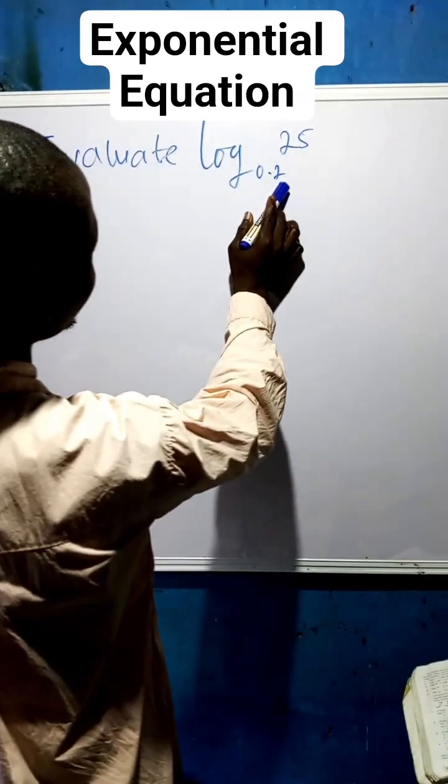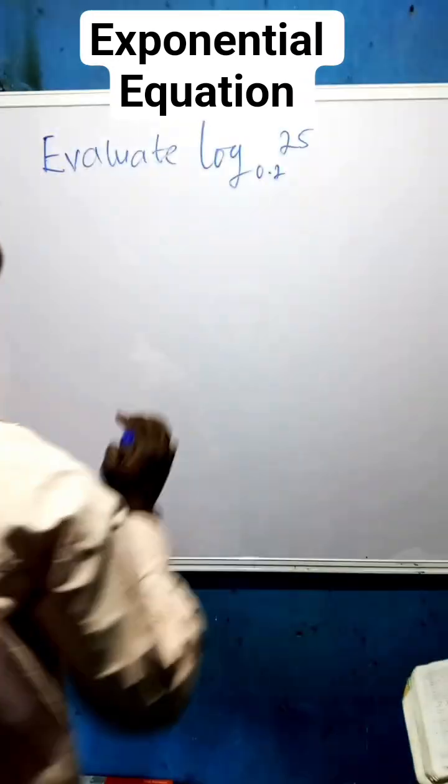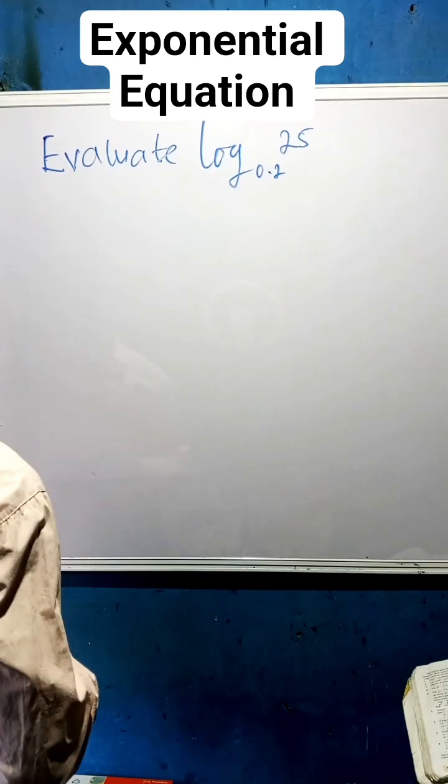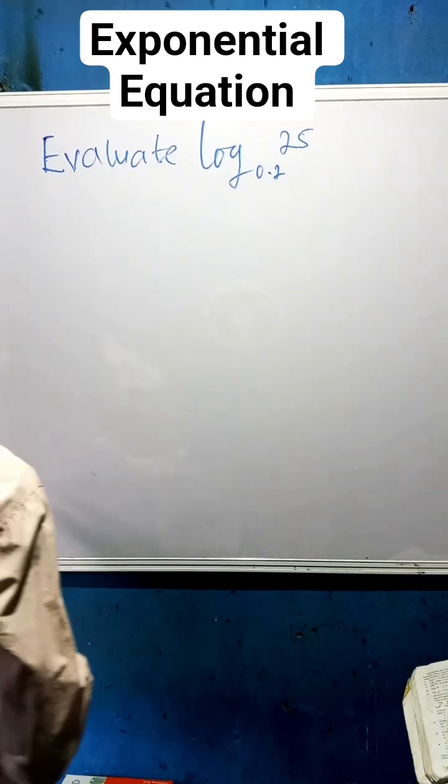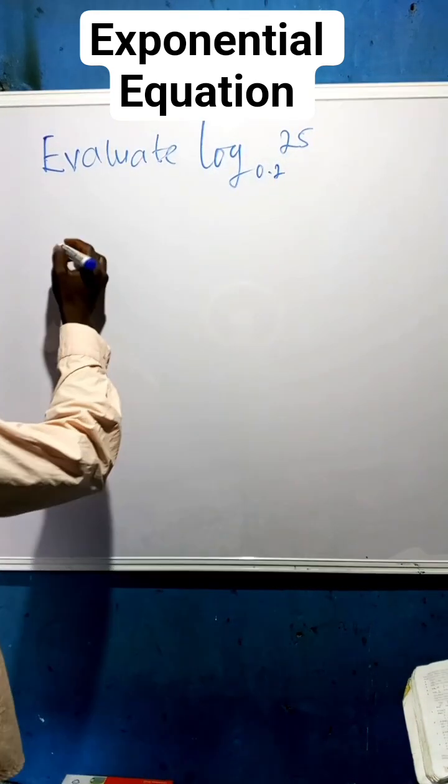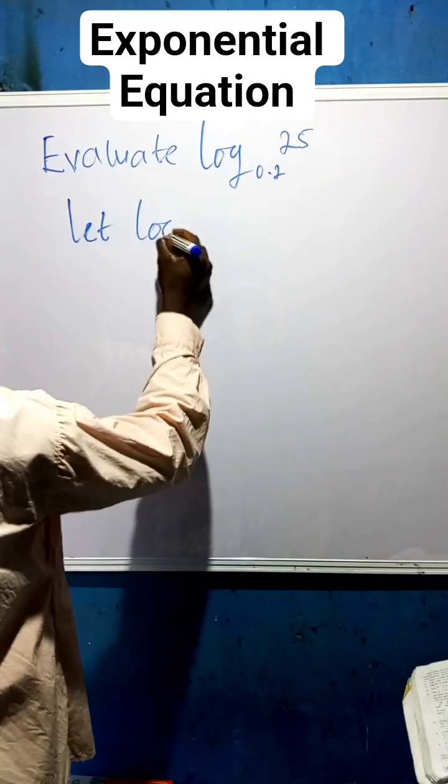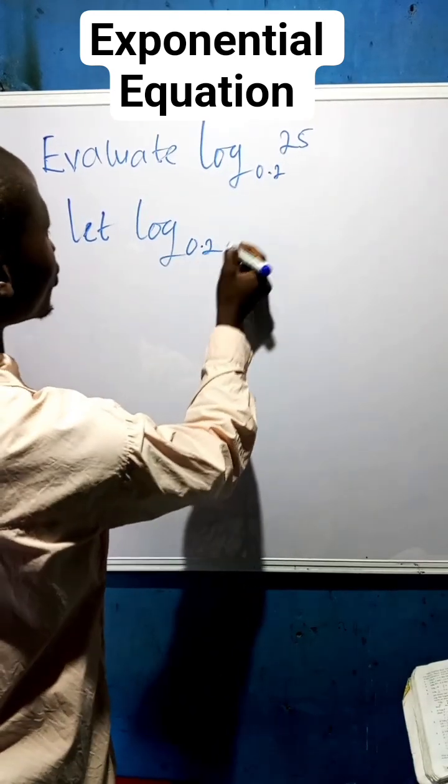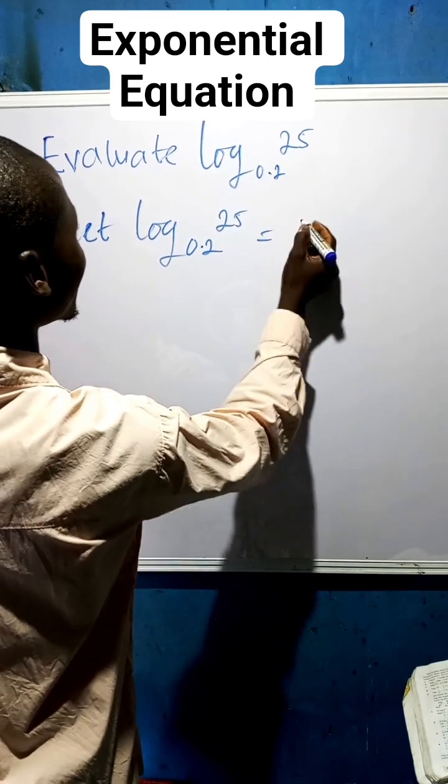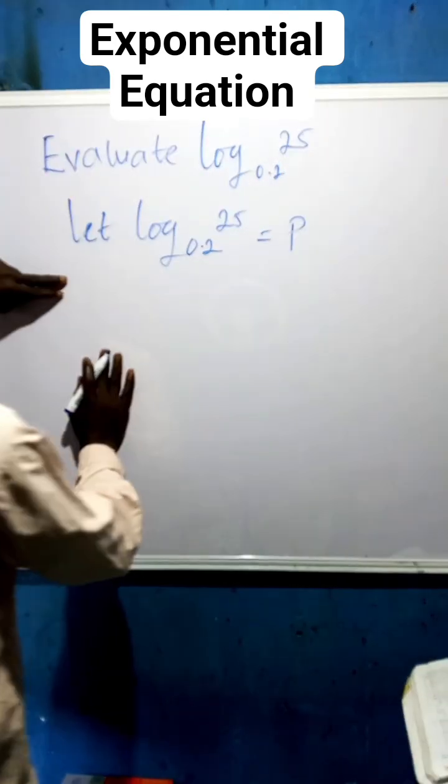Evaluate log base 0.2 of 25. Let us solve this, it's very simple. Let log base 0.2 of 25 equals to P.